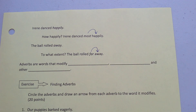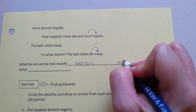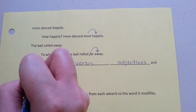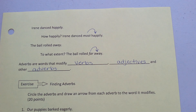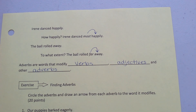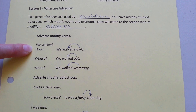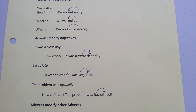So adverbs are words that modify verbs, adjectives, and other adverbs. If you need help finding them in a sentence, ask these questions: how, where, when, and to what extent? Those are the questions that adverbs answer. Now you're ready to do the exercise on page two of this assignment.